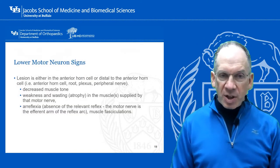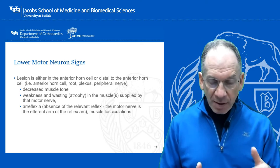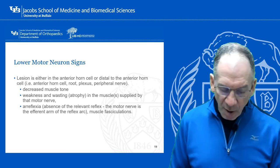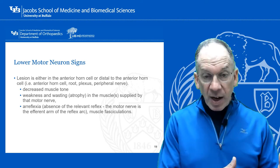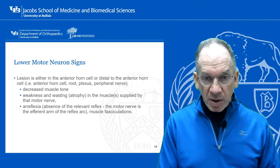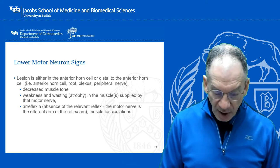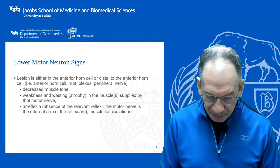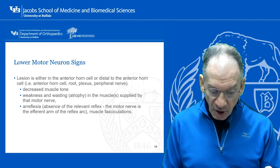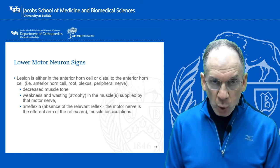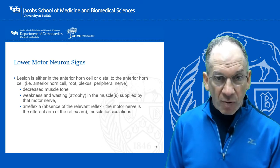Now we're getting into lower motor neuron signs. This can be at the anterior horn cell or distal to it — at the level of the nerve root, brachial plexus, or peripheral nerve. When you have a lower motor neuron compression, you have decreased muscle tone — just the opposite of upper motor neuron signs — weakness and wasting. The key difference is areflexia. When you have an upper motor neuron lesion you have hyperreflexia; when you have a lower motor neuron lesion, you have areflexia.